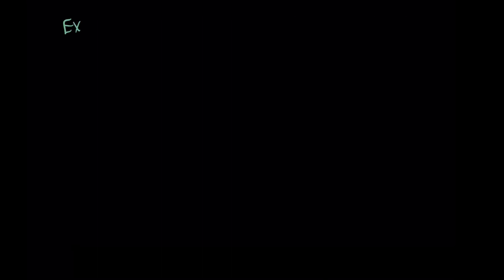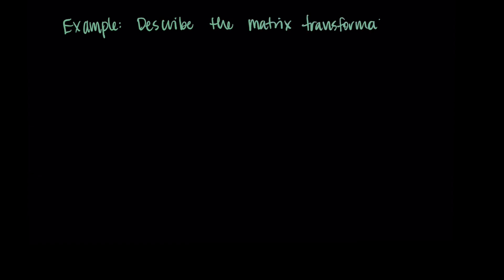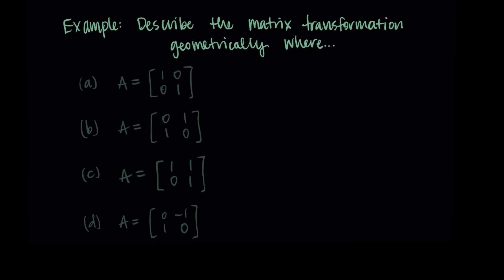For the rest of this video, we're going to look at four different matrices and describe the matrix transformations that correspond geometrically. These all involve ones and zeros in different positions, and we're going to see the different effects they have. Obviously you don't have to have just ones and zeros — you can have different numbers too — but I'm just considering these basic cases to give us a sense for what is possible.